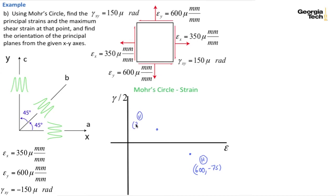So 350 and 75. And I leave the units off again for shorthand. I can draw a line in between these two for my diameter, and then I can draw my Mohr circle.